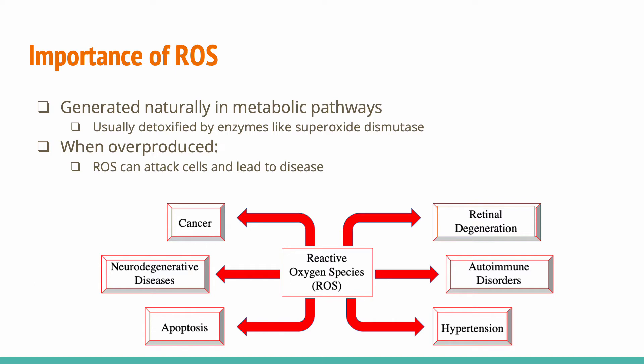ROS are very important. They are naturally generated in metabolic pathways within the human body. However, they are usually detoxified by certain enzymes throughout these different pathways. When they are overproduced, though, the ROS can attack cells, and it can lead to diseases including cancer, neurodegenerative diseases like Alzheimer's or Parkinson's, cell death, hypertension, and a lot of other diseases.